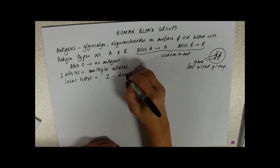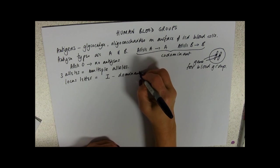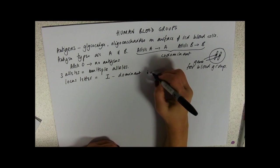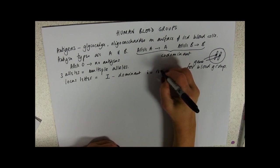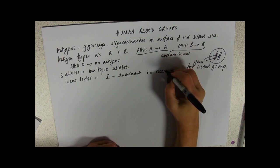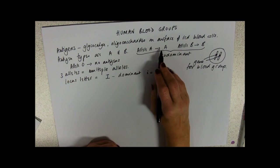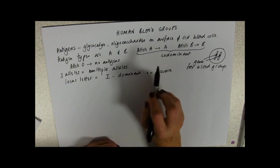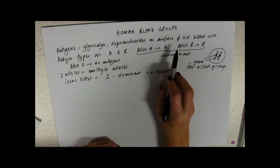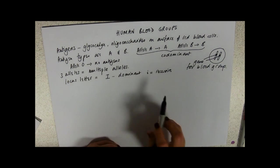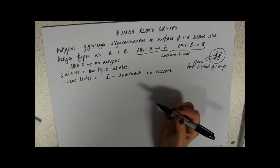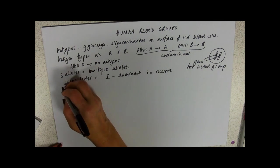Big I means dominant and little i is recessive. So this is a dominant allele, that's a dominant allele. They're co-dominant with each other, but they're both dominant over O, which leads us to have four different phenotypes.